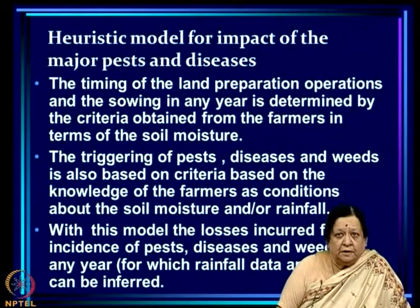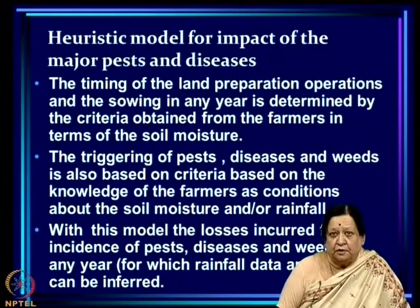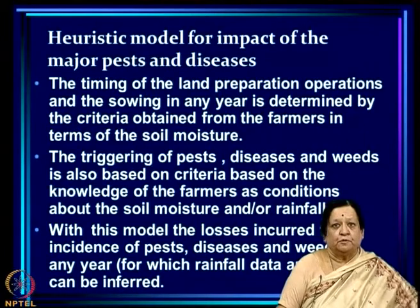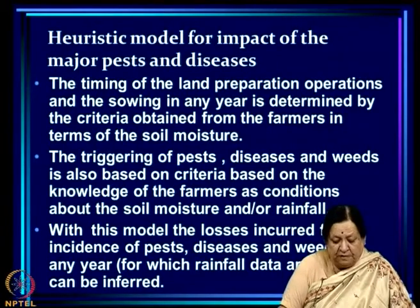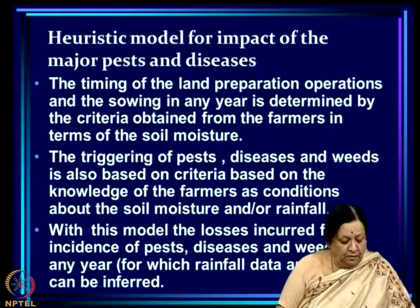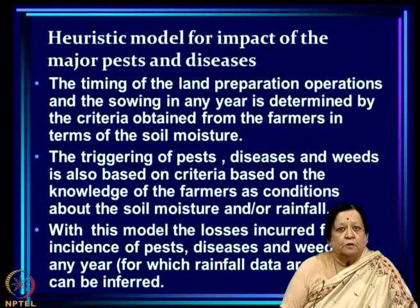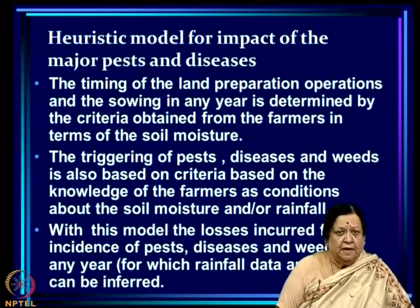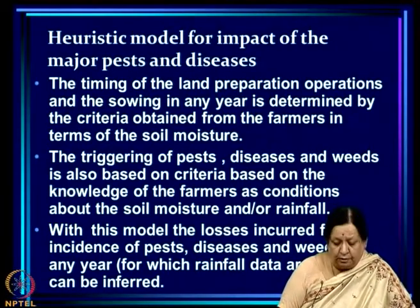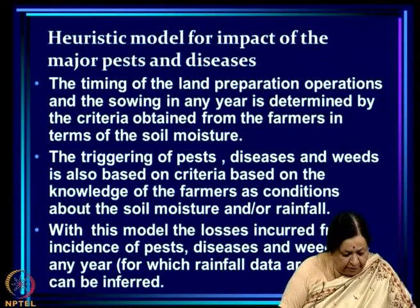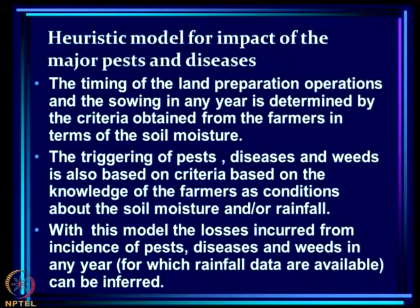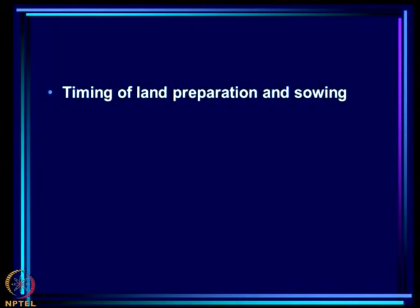The timing of land preparation was determined using a simple hydrological soil moisture model, incorporating the criteria that farmers use for land preparation operations. The triggering of pest diseases and weeds is also based on farmers' knowledge about conditions of soil moisture and rainfall. Based on that knowledge, we developed the criteria. With this model, the losses from pest diseases and weeds in any year for which rainfall data are available can be inferred.